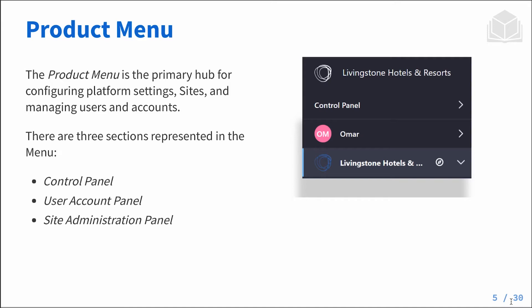The product menu, on the other hand, is the menu on the left, and it contains our administrative panels — things like the control panel, the user panel, and the site administration panel. The control panel contains our administrative tools, such as adding or managing users and configuring the platform. The user panel is specifically for user account information, and the site administration panel is specifically for managing assets for the site or some of the site configuration itself.